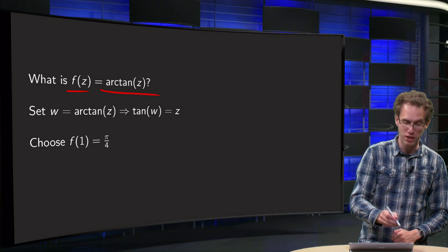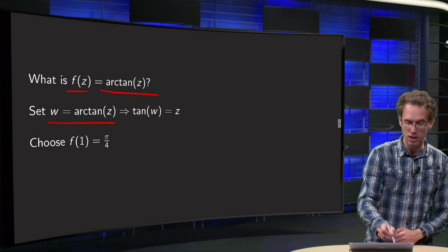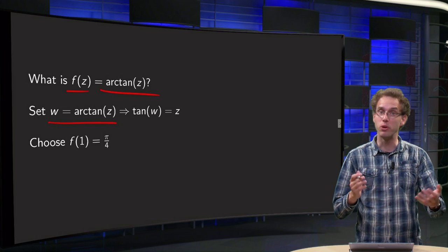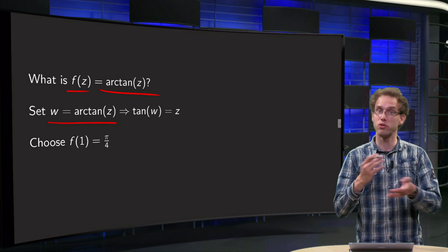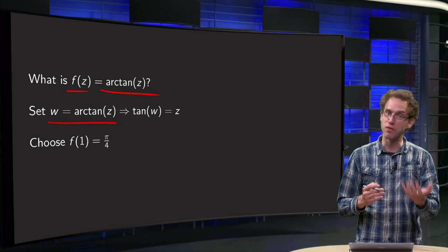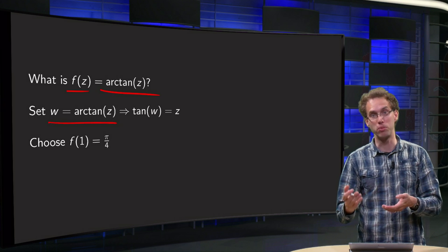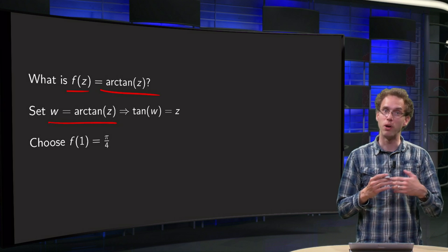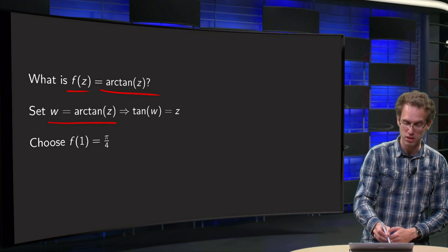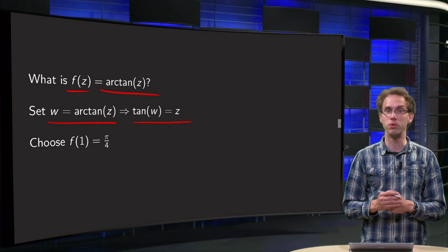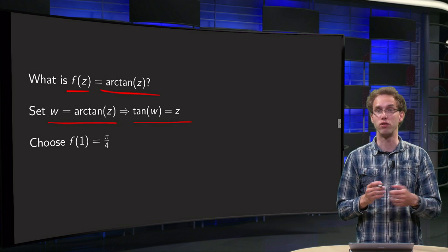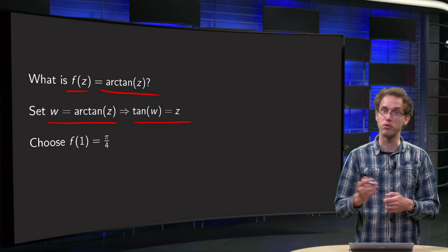Let's set w equals f of z. That means that we want to know what w is: w equals arctangent of z, and we want to find w in terms of z. Well, w equals arctangent of z means tangent of w equals z, and we have to solve for w in terms of z.